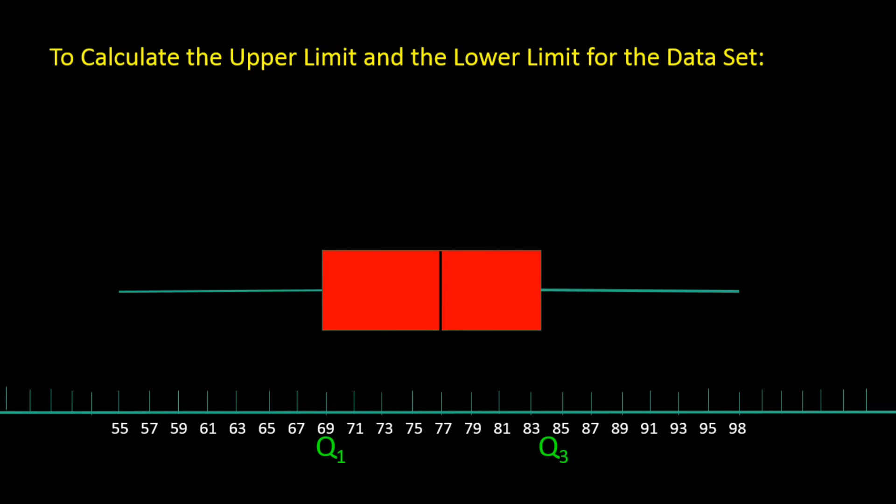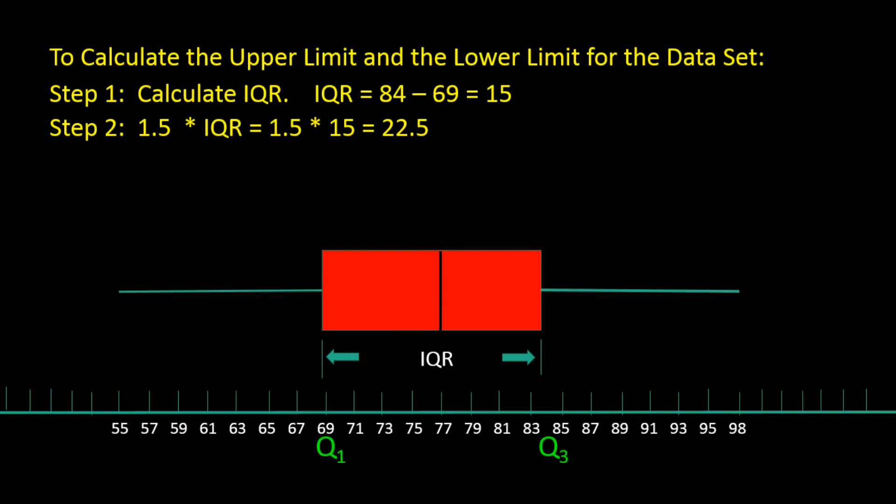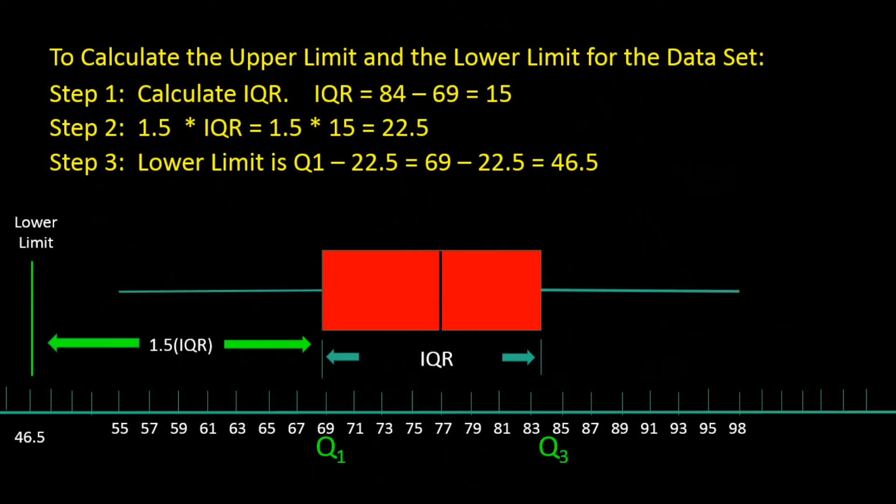To determine the upper and lower limits, first we have to calculate what's called the interquartile range. The interquartile range is Q3 minus Q1, which is 84 minus 69, which is 15. Step 2 is then to multiply the IQR by 1.5. 15 times 1.5 is 22.5. The lower limit is then Q1 minus 22.5, so we take 69 minus 22.5 and we get 46.5. So 46.5 is the lower limit.